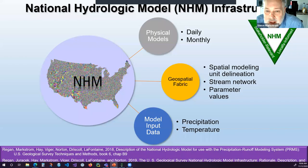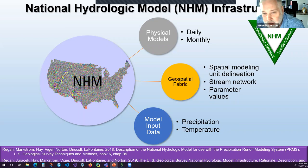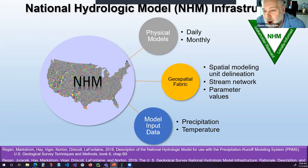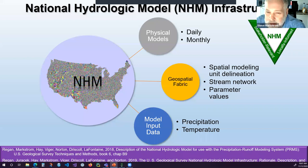The idea was that for this kind of study in the future, we would set up a national hydrologic model — basically treat the whole lower 48 as a giant watershed and model it all in the same way. The three components we worked on to make this up are: physical models, geospatial fabric, and input data.